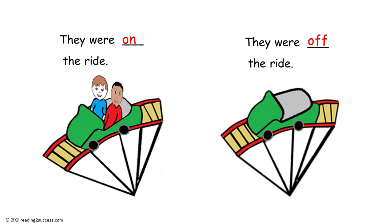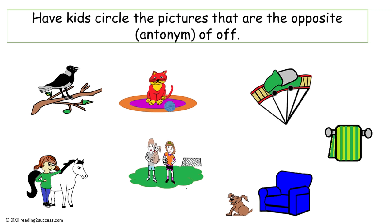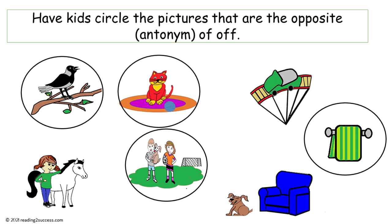Now have kids read the sentences for the antonyms on and off. They were on the ride; they were off the ride. Have kids circle the pictures that are the opposite, the antonym of off — so they are looking for pictures that show something that is on. The pictures that show something is on are the bird on a branch, the cat on the rug, the kids on the field, and the towel on the towel rack.